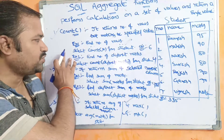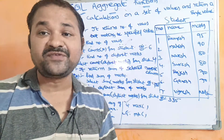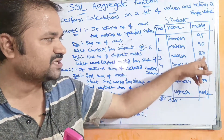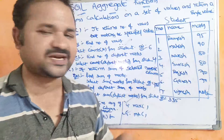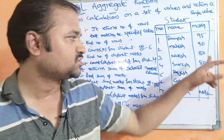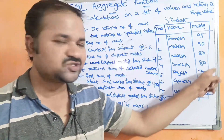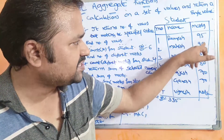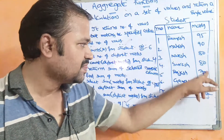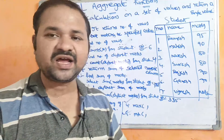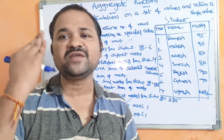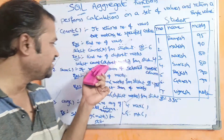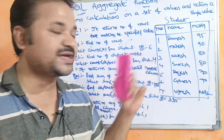Here is one more example for count: find the number of distinct marks. If we observe, we have values 95, 90, 80, 80, 70, 70 — so there are duplicate values. Distinct means only one value is considered per duplicate group. Out of two 80s, only one is considered; out of two 70s, only one is considered. The null is ignored. So the query SELECT COUNT(DISTINCT marks) FROM student gives output as 4.